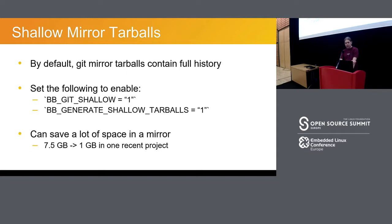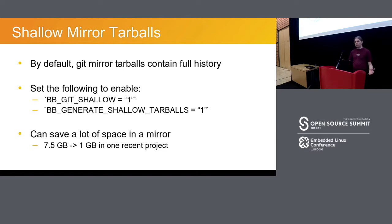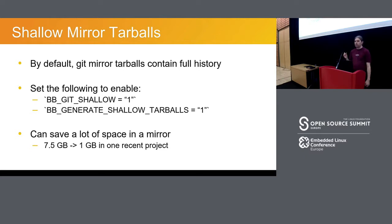One thing that's really useful is generating shallow mirror tarballs. If you've got a big repository like a Linux kernel, the version you're actually using might be an 80 or 100MB tar.gz, but if you pull the full git repository history that might be 2GB. You can set BB_GIT_SHALLOW and generate shallow tarballs, which will generate mirror tarballs that have just the commit you're actually using. On a recent project, this got our mirror size down from 7.5GB to just 1GB.